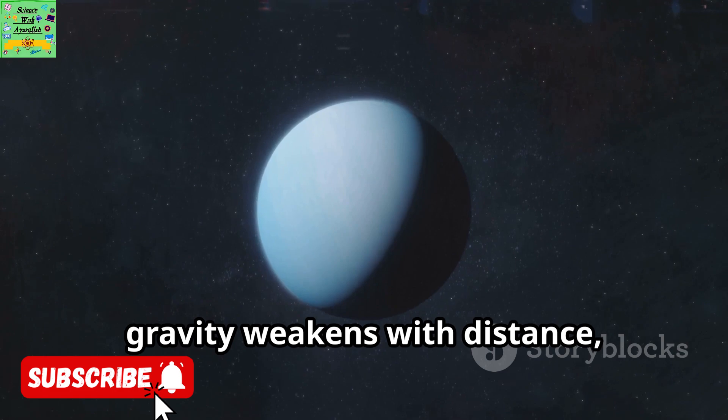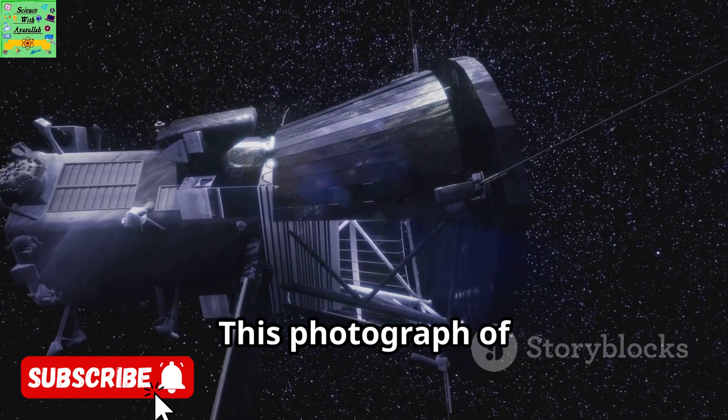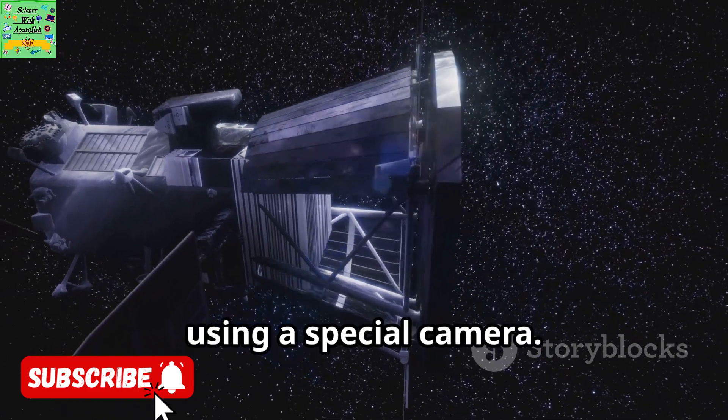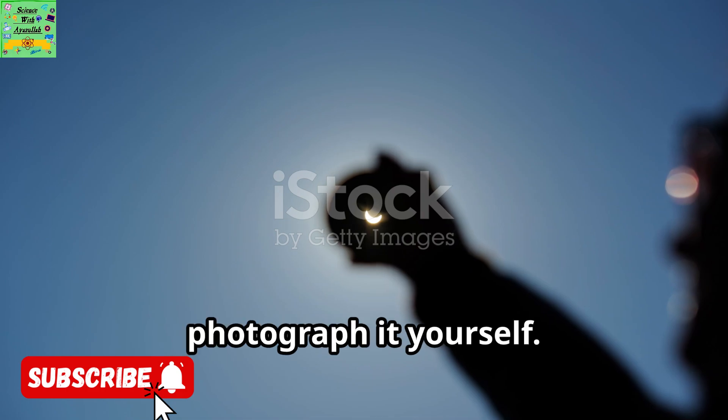Neptune has about 17 times the mass of Earth. So even though gravity weakens with distance, the Sun still holds Neptune in orbit. This photograph of the Sun was taken from a spacecraft using a special camera.